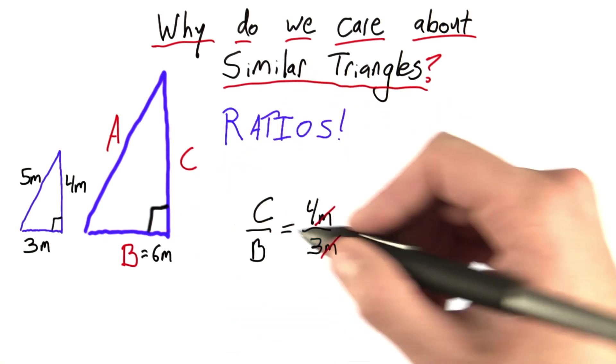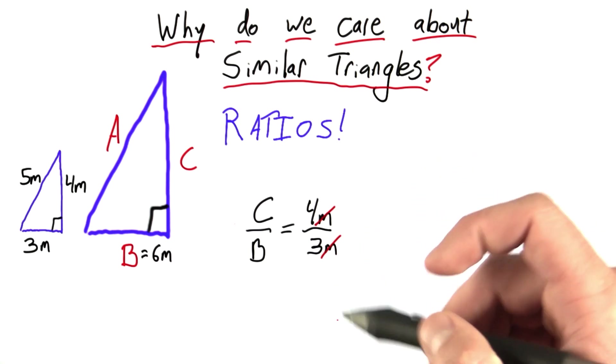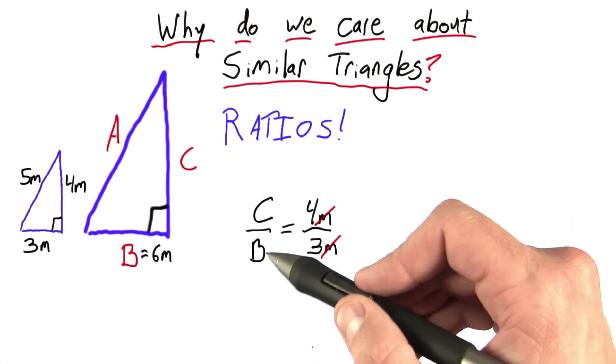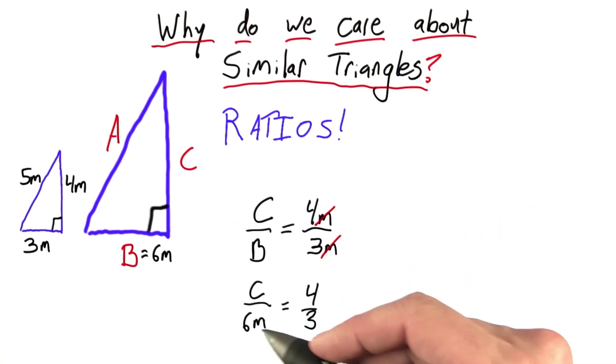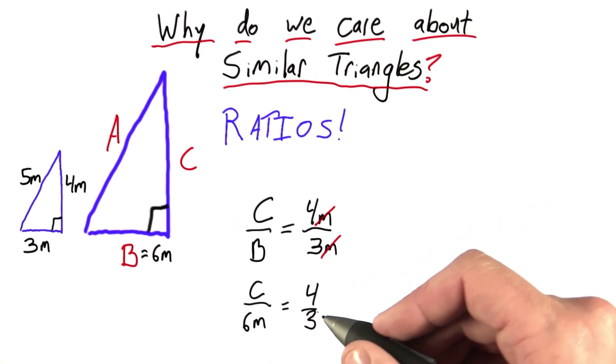Okay, so now I know this ratio. C over B is equal to 4 over 3. But notice that I have one other piece of information. Big B is actually equal to 6 meters. So let's write that in. Now, if I want to solve for C, I multiply both sides by 6 meters.